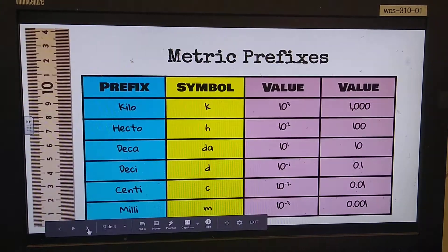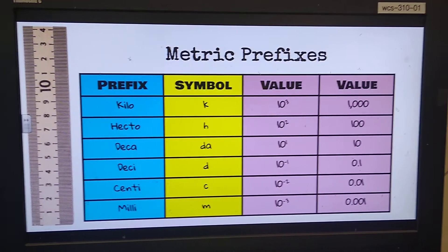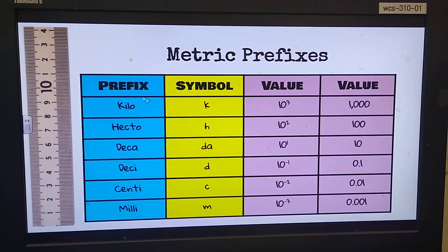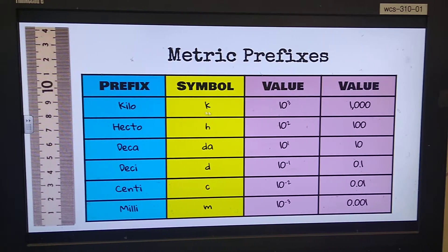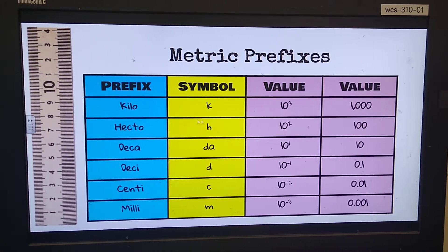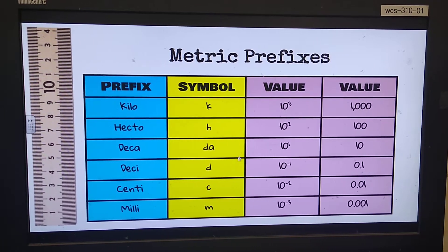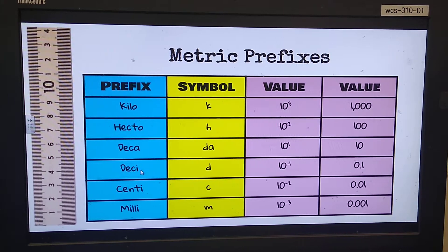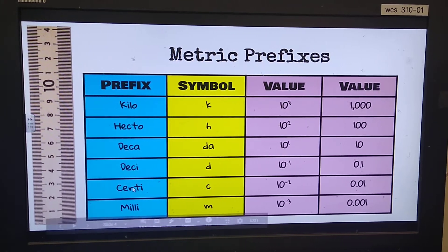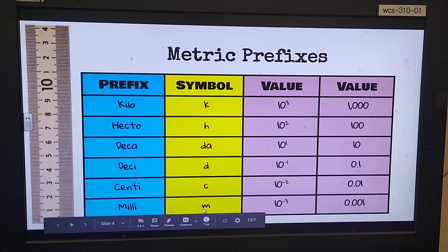So let's take a look at what some of these units will be. Here's all the prefixes: kilo is going to be a lowercase k, hecto is an h, deca is da, desi is d, centi is c, and milli is m.